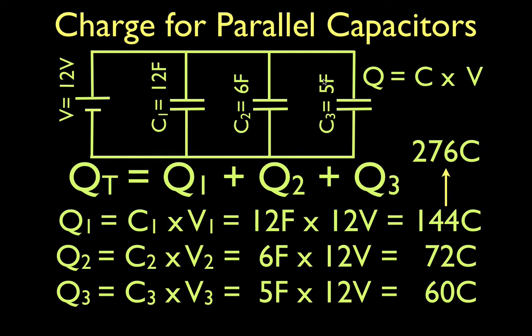Now, the other thing we could have done to get the total charge, we found the charge on the individual capacitors. To get the total charge, we could have taken the total capacitance times the total voltage. We could just use this equation, Q equals C times V. We want to find the total charge, total capacitance times the total voltage.